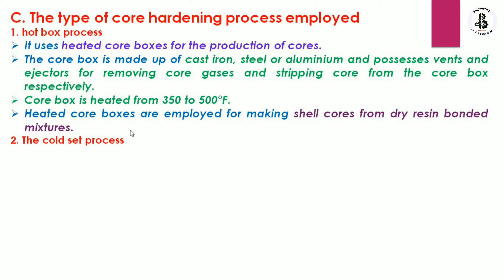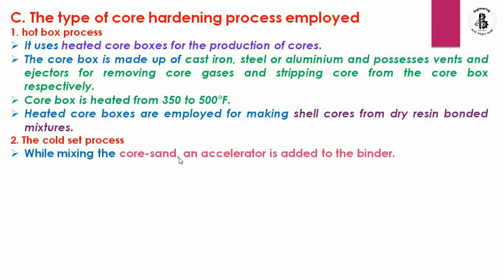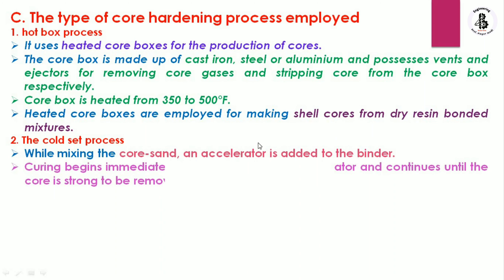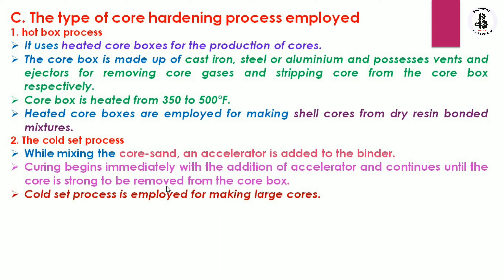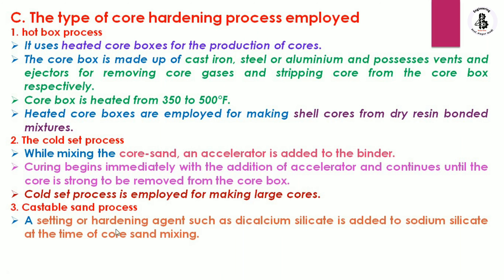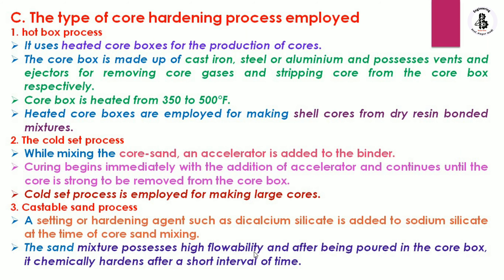The second is the cold set process. In the cold set process, while mixing the core sand, an accelerator is added to the binder. Curing begins immediately with the addition of the accelerator and continues until the core is strong enough to be removed from the core box. The cold set process is used for making large cores. The third process is the castable sand process, in which a setting or hardening agent such as dicalcium silicate is added to sodium silicate at the time the core sand is mixed. The sand mixture has high flowability and after being poured into a core box, it chemically hardens after a short interval of time.